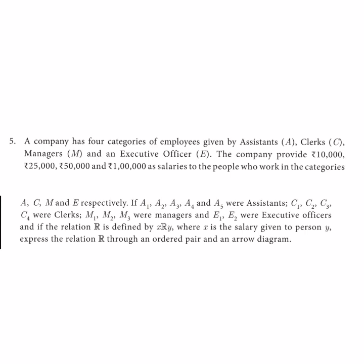A company has 4 categories of employees given by: Assistants A, Clerks C, Managers M, and Executive Officer E. The company provides 10,000, 25,000, 50,000, and 1 lakh as salaries to the people who work in the categories A, C, M, and E respectively.